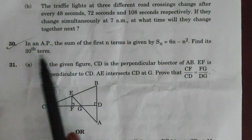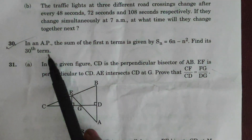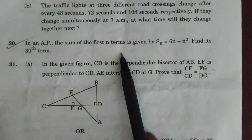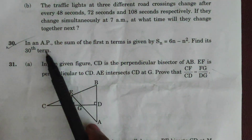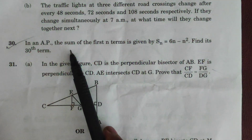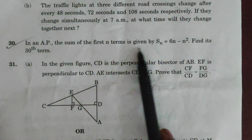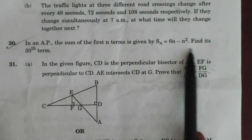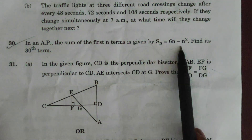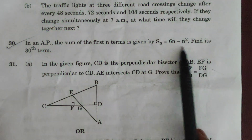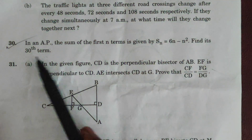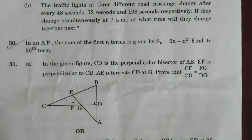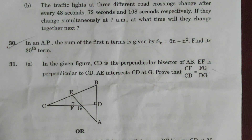Question from Section C, worth 3 marks: the sum of the first n terms is given as Sn = 6n - n². Find the 30th term.